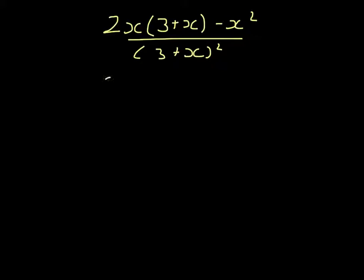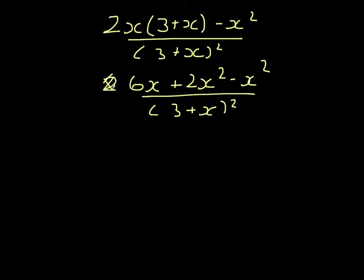Expanding the numerator, we get 2X times 3. So that would be 6X plus 2X squared minus X squared all over 3 plus X all squared. Top line then becomes 6X plus X squared all over 3 plus X all squared.